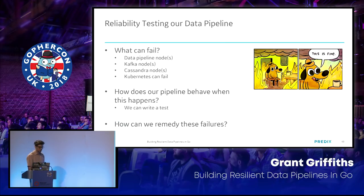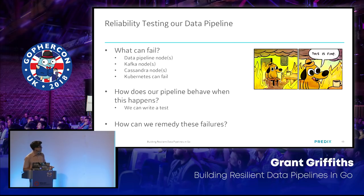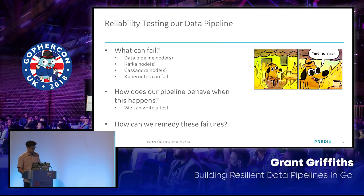Let's talk about what can actually fail in our Gophers R Us data pipeline. Data pipeline nodes could go down. Kafka nodes could go down. Cassandra nodes could go down. Kubernetes could fail. How does our pipeline behave when this happens? In order to answer that question, we need to write a test — and we need to understand how to remedy these failures.